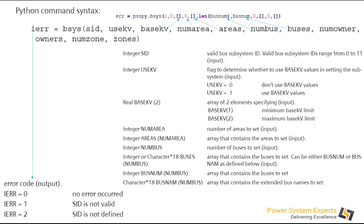Here I've explained how I've used it in a program. The error variable returns the error code from this particular function. I'm using psspy dot bsys as the command. Here, one means the SID I am giving is one. I'm not using any baseKV voltages filter, so my baseKV flag is an empty list. Similarly, I'm not using any area number and I'm filtering everything in terms of buses.